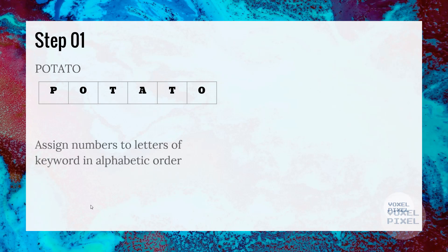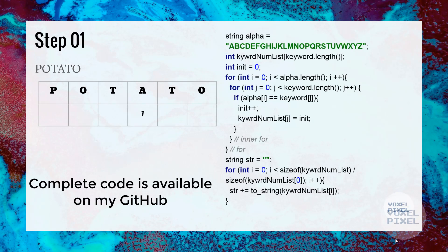Next, we assign numbers to letters of keyword in alphabetic order. Number assignment can be achieved by this code. Since A is the first letter in the alphabet, we will assign it number one.